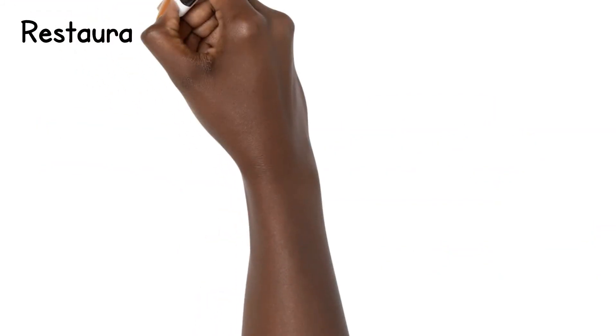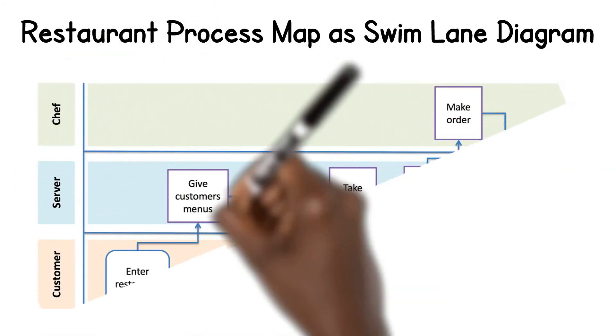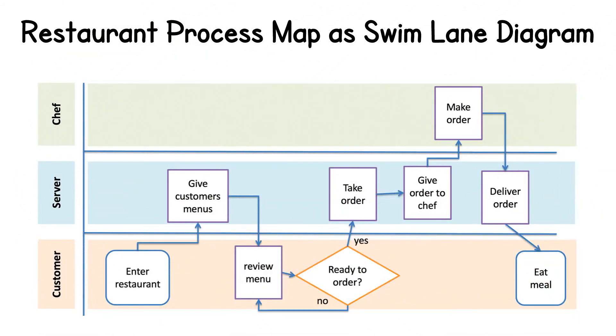This slide shows the same process with the same process steps put into a swim lane diagram. Each process step is separated into the customer, server, or chef's lane, depending on who is responsible for completing that process step. You can quickly see who performs each activity, and you can even add the average time it takes to complete each task to the process map to further describe the process.